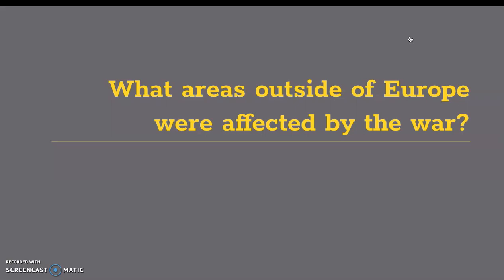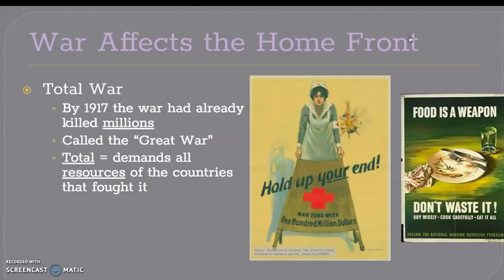What areas outside of Europe were affected by the war? We covered a little bit about Africa and Asia, and now we're looking at the United States. When I talk about the home front, I'm talking about here in the United States. By 1917, the war had already killed millions — this is why it became known as the Great War. Total war means this war demands all resources of the countries fighting in it to be produced for the war. You can see here various propaganda posters created to convince people to join and contribute to the war.